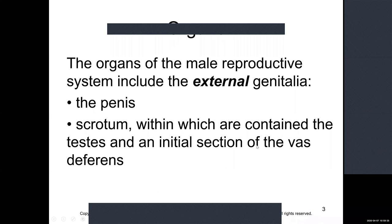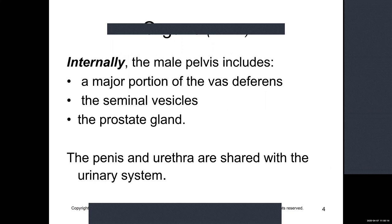The male external genitalia — genitalia being defined as the reproductive organs whether male or female — externally includes the penis and the scrotum. Inside the scrotum are the testicles or testes, along with the epididymis and part of the vas deferens. Internally, we have the majority of the vas deferens, the seminal vesicle, and the prostate gland, leading to the urethra and then the external portion.